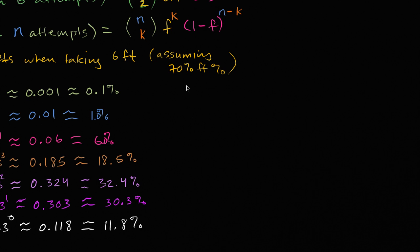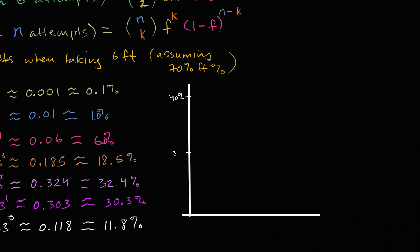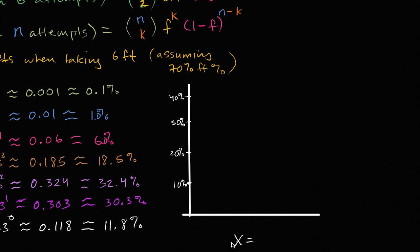Let me draw some lines. If I were to just draw one line there, and then another line here. And then we have the different percentages. The highest one is a little over 30%, 32%, so maybe we'll go as high as 40% here. 40%, and then this would be 20%, 10%, and 30%.